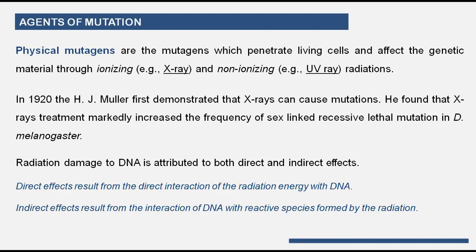This was proved by H.J. Muller using X-rays — another type of physical mutation — in Drosophila melanogaster. By looking at the frequency of sex-linked recessive lethal mutations in Drosophila melanogaster, they identified that X-rays can induce a physical way of mutation. These radiations damage DNA in two ways: direct effects or indirect effects.